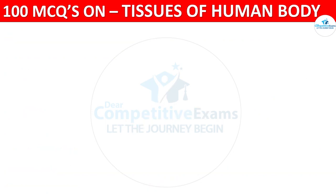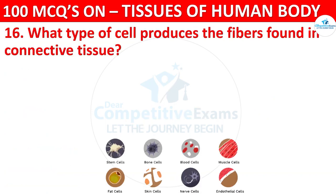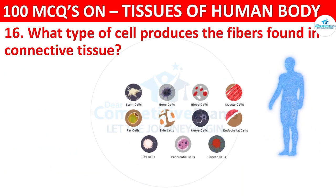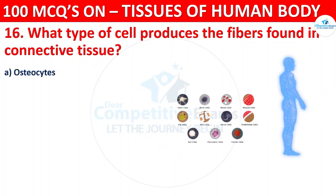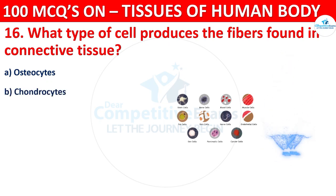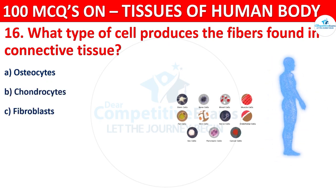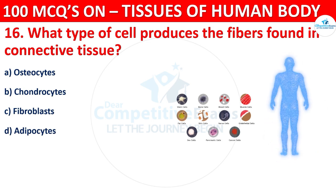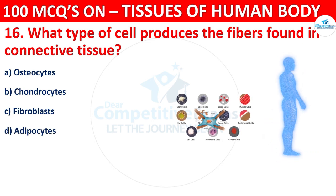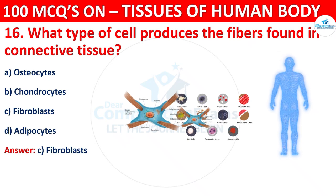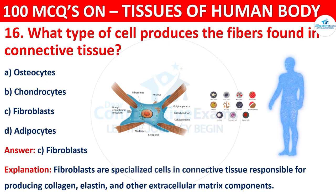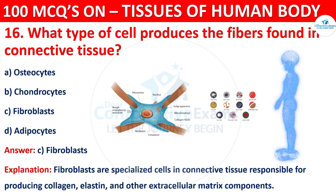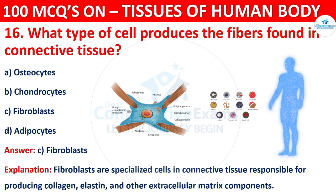Question number sixteen: what type of cell produces the fibers found in connective tissue? Options are osteocytes, chondrocytes, fibroblasts, or adipocytes. The correct answer is C, that is fibroblasts. Fibroblasts are specialized cells in connective tissue, responsible for producing collagen, elastin, and other extracellular matrix components.